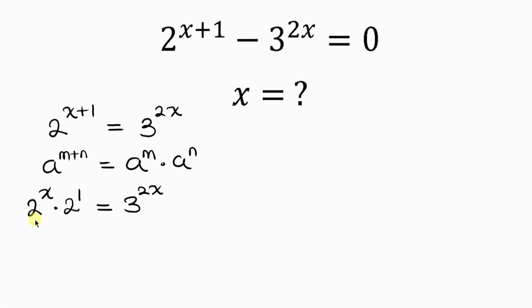We know that 2 to the 1 is 2, so this becomes 2 to the x times 2, equal to 3 to the 2x.